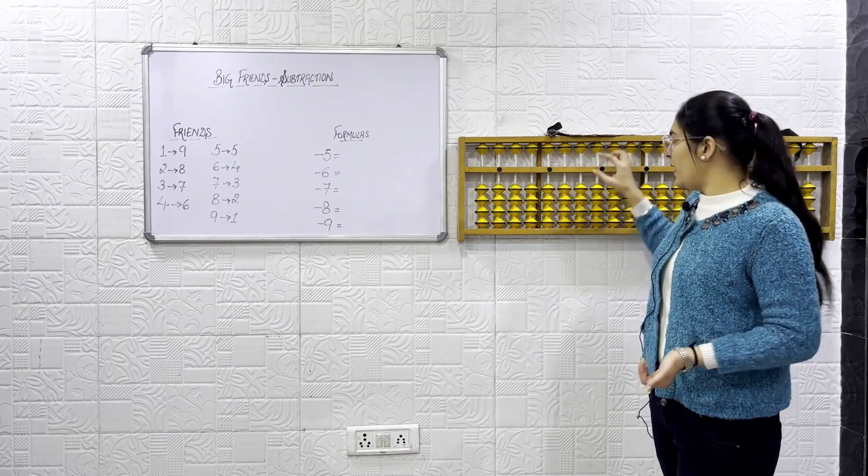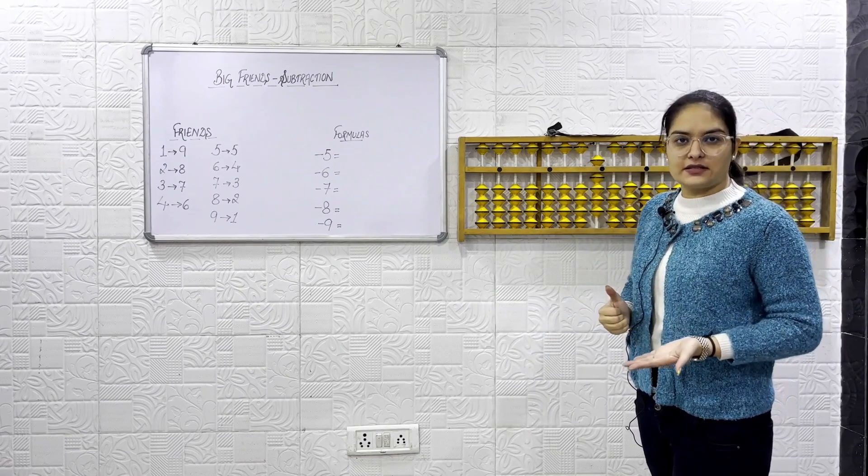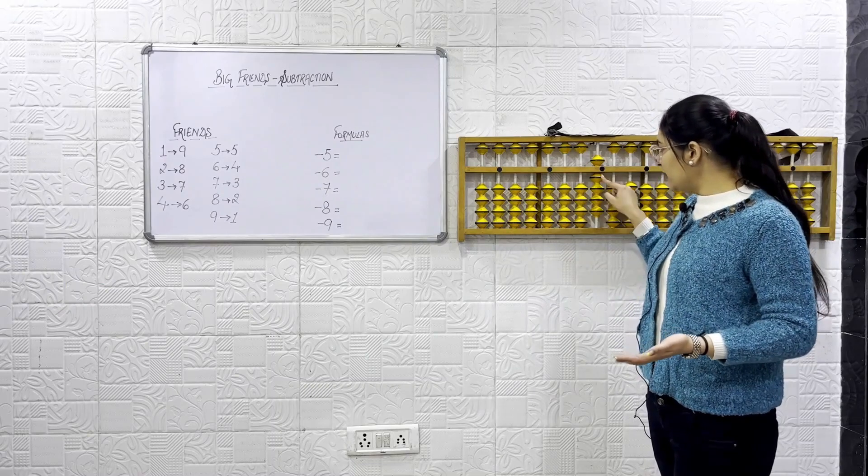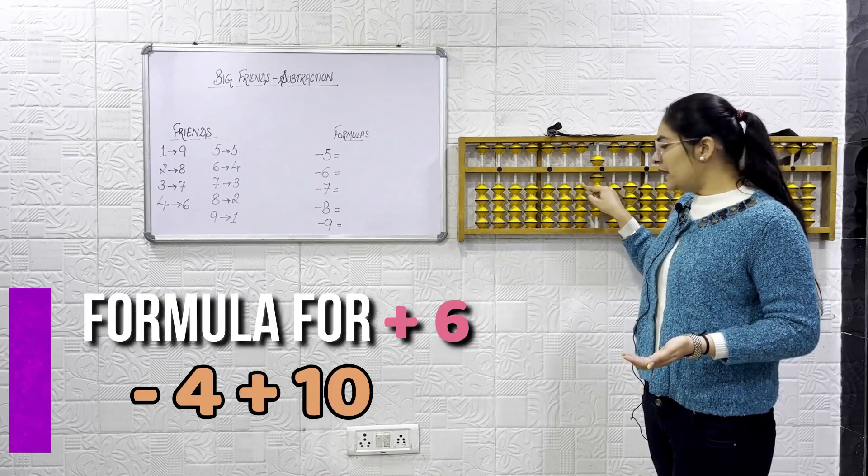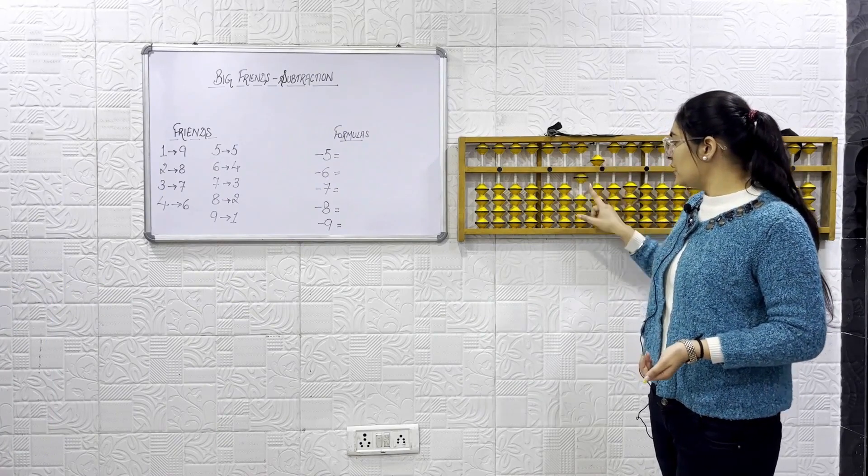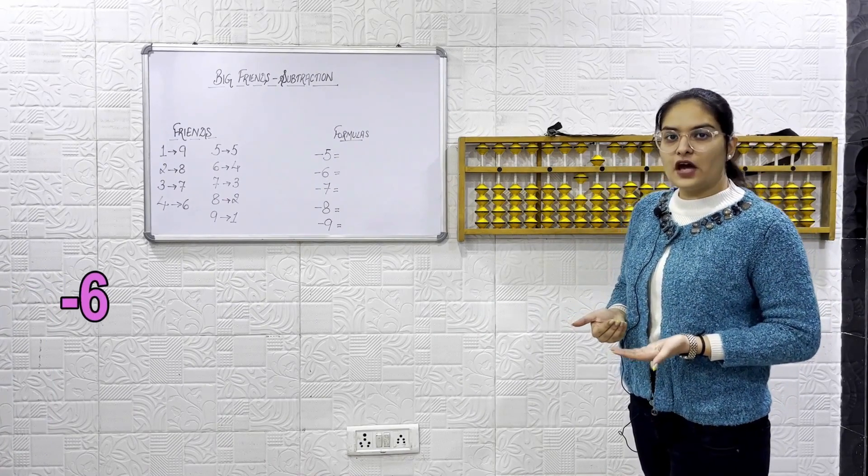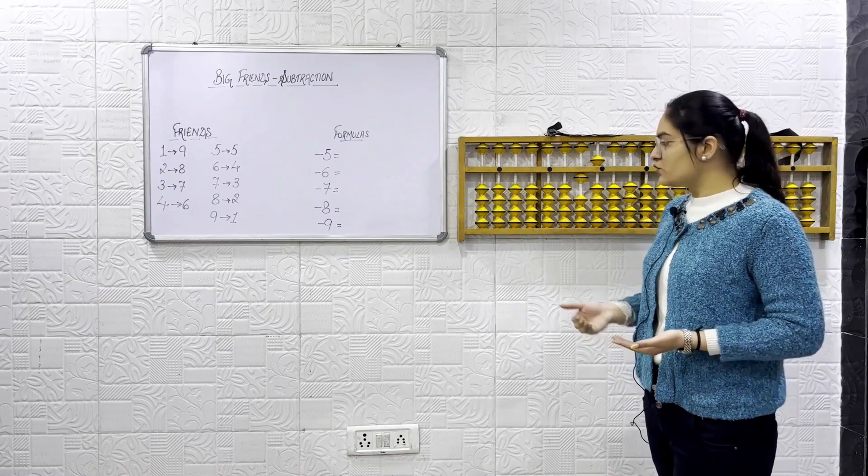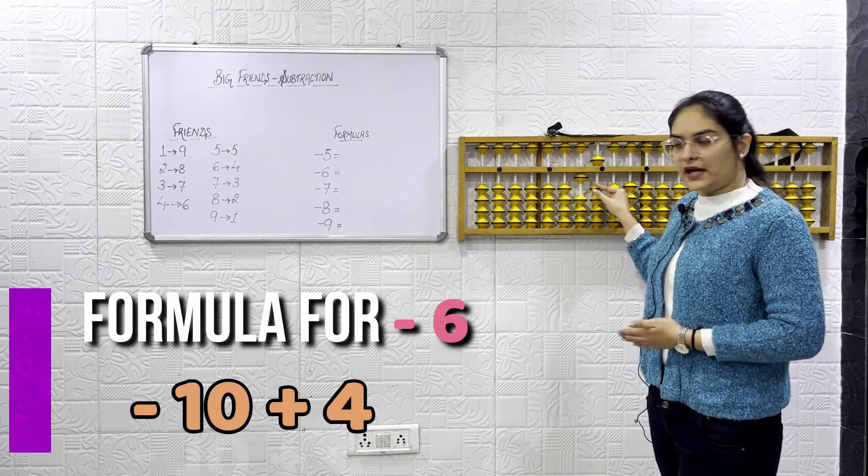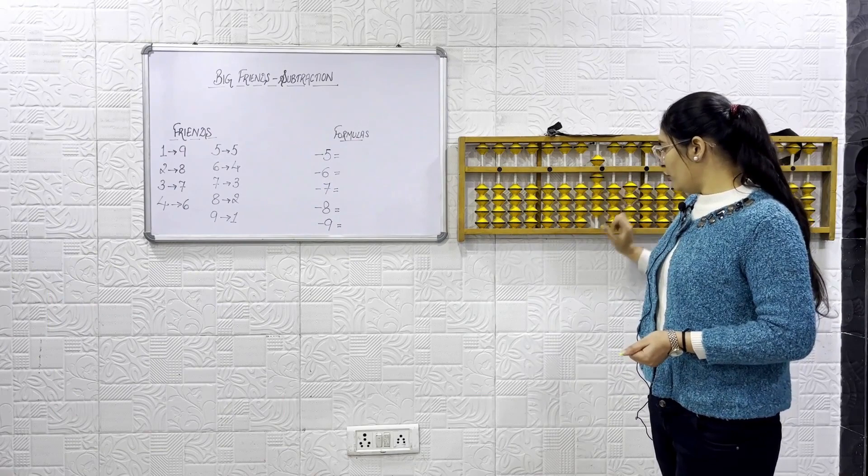Now, place 9 on the order of abacus. In this we have to do plus 6. What is the formula for plus 6? Minus 4 plus 10. Now, in this we have to do minus 6. So, formula for minus 6 will be minus 10 plus 4.